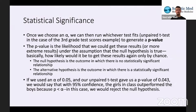Once we choose the alpha — say 0.05 for 95% confidence — we can run whichever test fits. An unpaired t-test in this case would be the best example. You don't have to know which test works best in which situation; that's definitely out of the scope of the MCAT.